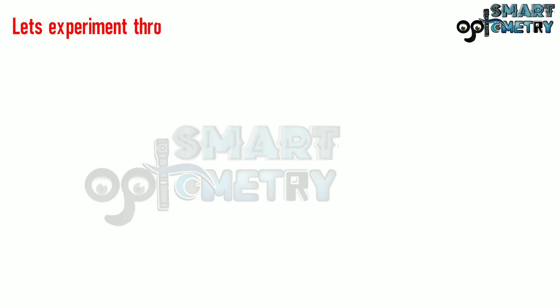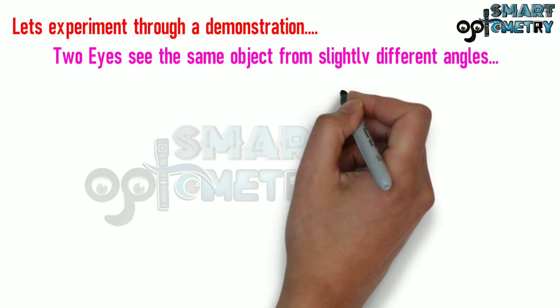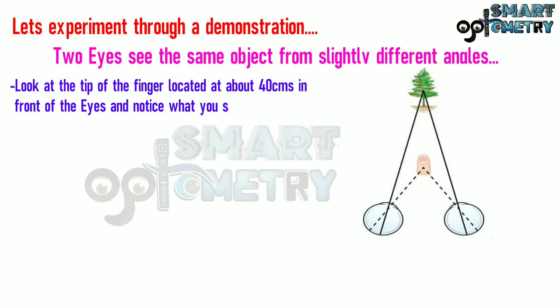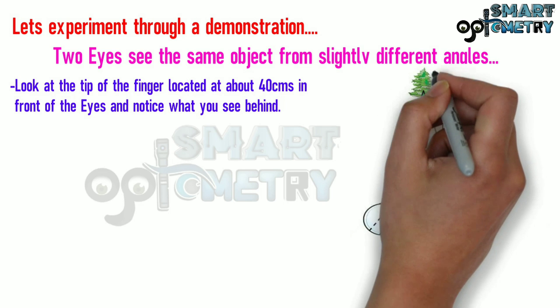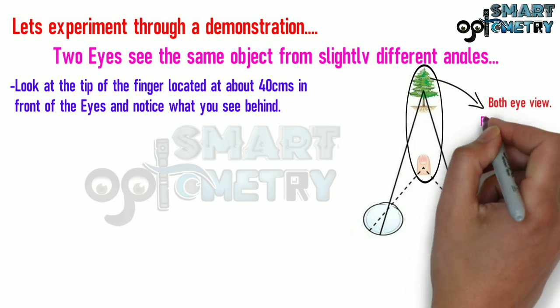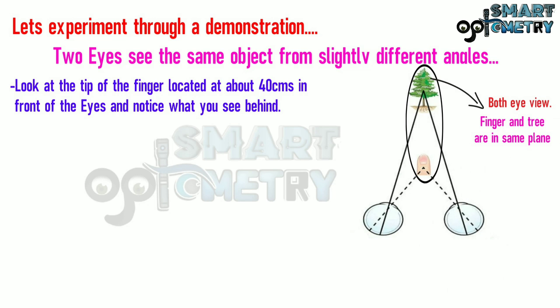Let's experiment through a demonstration. Two eyes see the same object from slightly different angles. Look at the tip of the finger located at about 40 centimeters in front of the eyes and notice what you see behind. This is both eyes' view: the finger and the tree are in the same plane.